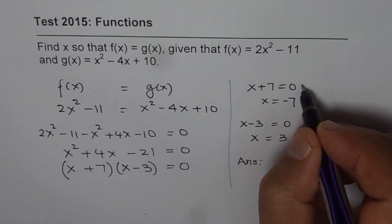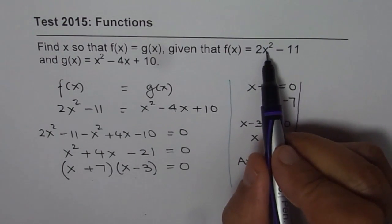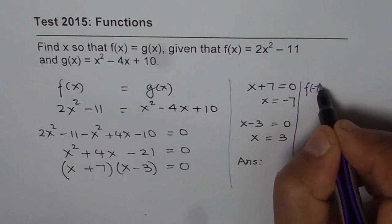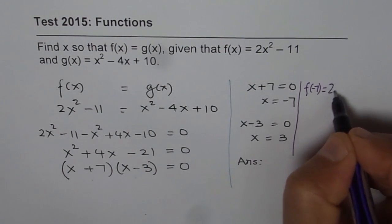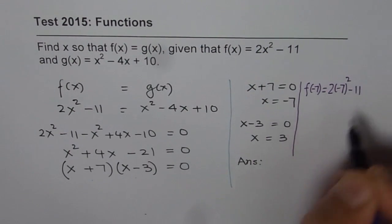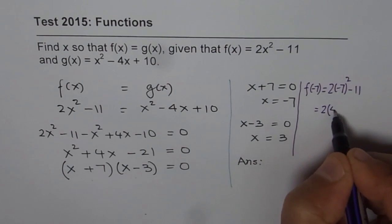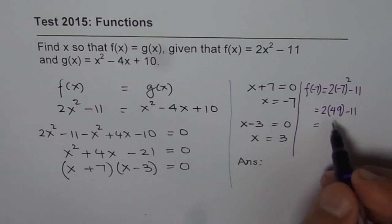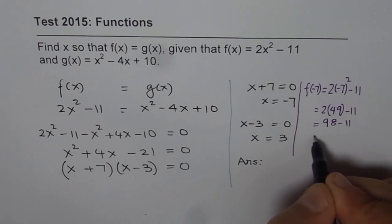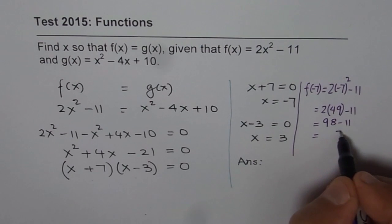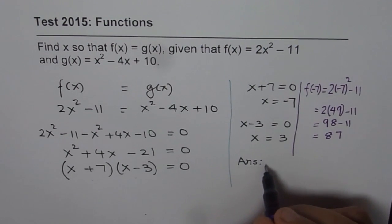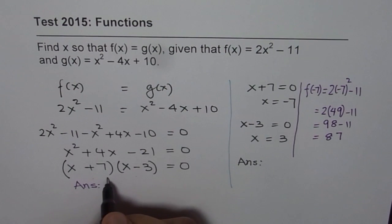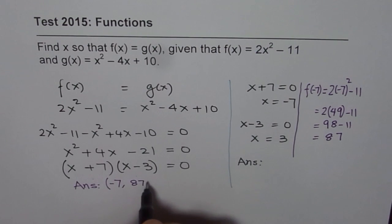So at x equals minus 7, what is the y value? We will substitute minus 7 here. So f of minus 7 equals 2 times minus 7 squared minus 11. That means 2 times 49 minus 11. 2 times 50 is 100, so it is 2 less, so it is 98 minus 11, and that gives us 87. So the first point for us is minus 7 and 87 is the y value.